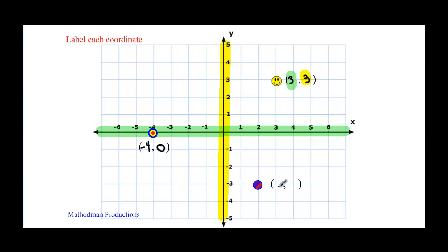Last point. It's right here. Where is it on the x-axis? It's at two. It's the first number that goes there. Now ask yourself, where is it on the y-axis? It's at negative three. This is the second number that goes there.